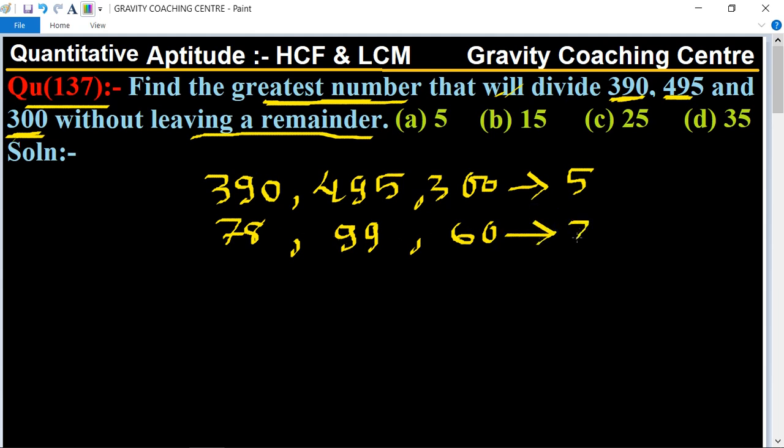26, 33, and 20 have no common factor other than 1. So our HCF is 5 times 3.